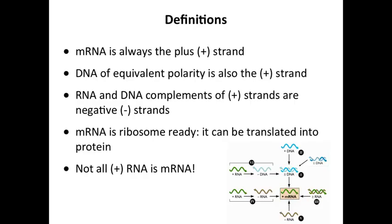Before going further with the Baltimore scheme, let's define some terms. These definitions have to do with polarity. mRNA is by convention the plus strand — someone asked if it has to do with electrical charge, but it doesn't. It's just convention that mRNA, what is translated, is called the plus strand. A DNA strand of equivalent polarity to mRNA is also the plus strand. Complements of plus strands are negative or minus strands — the words are used interchangeably.